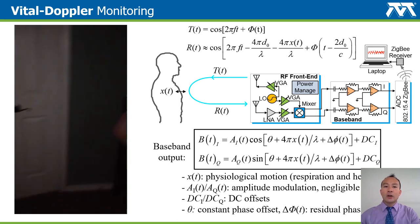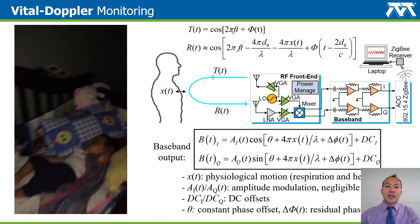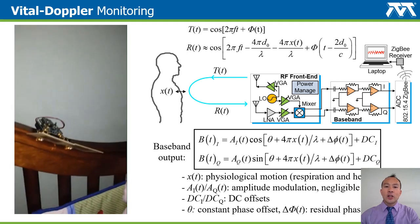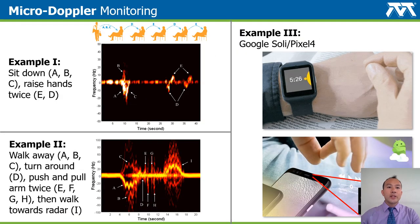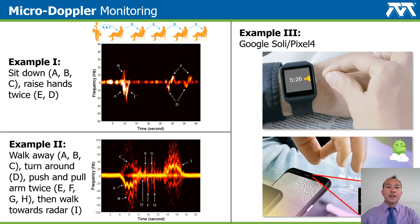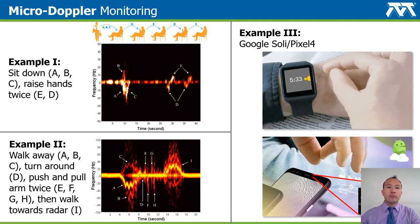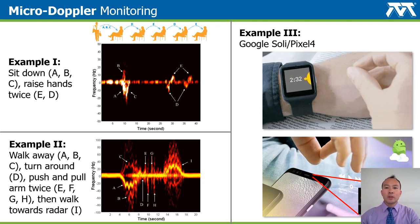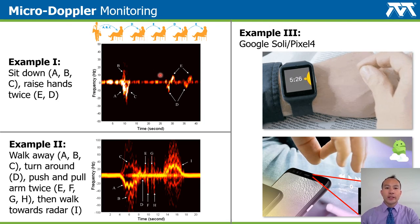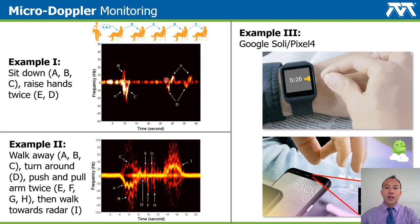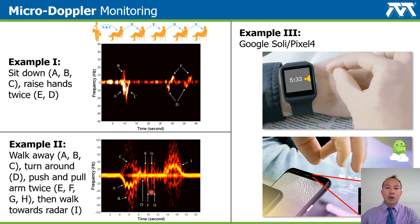I will also point out several key issues such as the DC offset and IQ mismatch in the sensor design. Besides the vital Doppler effect, another important mechanism is the micro-Doppler effect induced by the movement of body parts. I will use two examples to explain micro-Doppler monitoring of human activities. The first one had a person sit down and raise hands twice. The second one had a person walk away from the radar, push and pull the arm twice, then walk back to the radar.